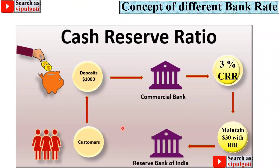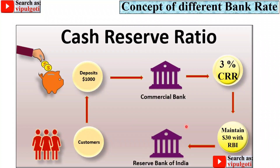To understand Cash Reserve Ratio with an example: assume CRR is 3%. If a customer deposits $1,000 in the bank, then 3% of $1,000 — that means $30 — must be maintained by the bank in the RBI. So $30 is reserved in the Reserve Bank of India, and the bank can use only $970 ($1,000 minus $30) to give credit to borrowers.